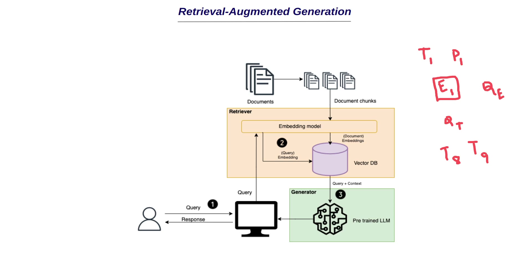When building generative AI applications, many company use cases are completely based on LLMs. For example, let's say there is a Udemy course and we're building a chatbot that can answer users' questions. We can get the transcription for this course, and when a user asks a query, we find the answer in the transcription and respond accordingly. In a later video, we'll also understand how to implement this in Python using libraries like LangChain and LlamaIndex.